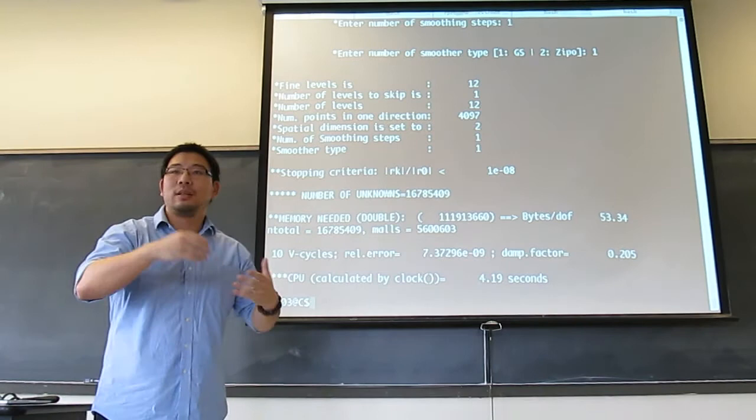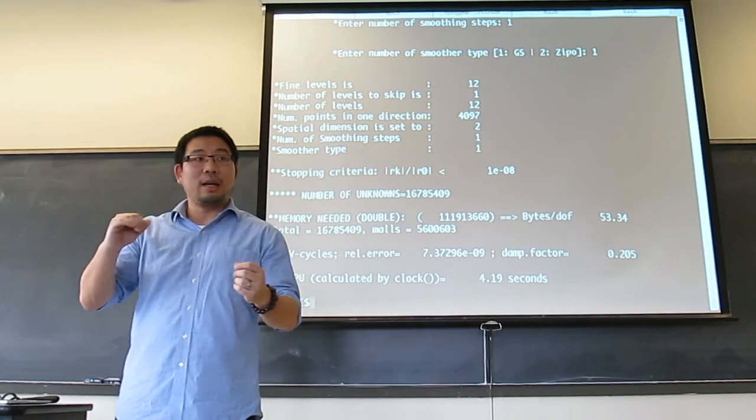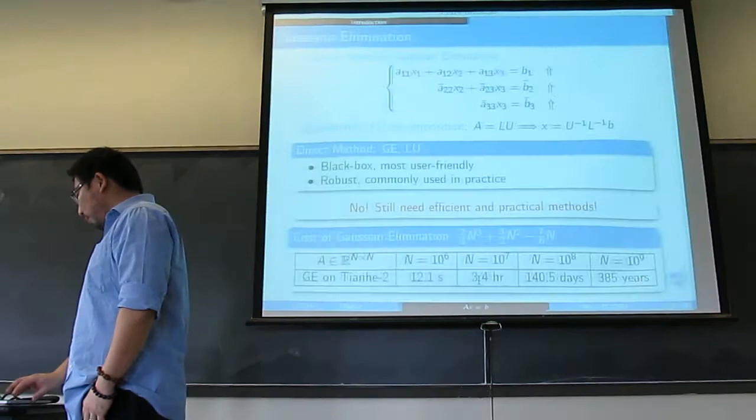It's not N cubed — it's O(N). The whole multigrid algorithm, if you design it efficiently, is an O(N) algorithm. It's very good for putting on a supercomputer to scale as well.